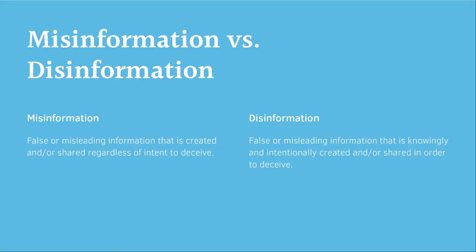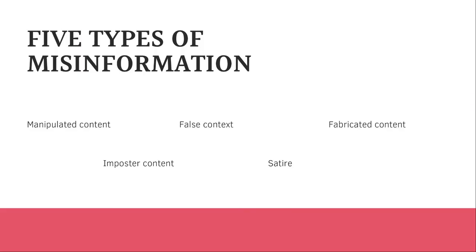Misinformation and disinformation mostly differ based on the motivation. Misinformation is false or misleading information that is created and or shared regardless of intent to deceive. Whereas disinformation is the same thing that is knowingly and intentionally created or shared in order to deceive. Trying to look into different motivations for creating disinformation would be a whole other webinar, but it's important to consider — especially knowing that it is very frequently not clear what the motivation behind something is. But sometimes it's a little bit easier when you consider the types of misinformation.